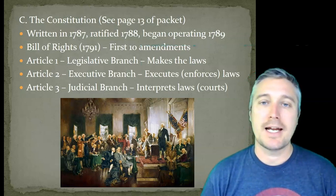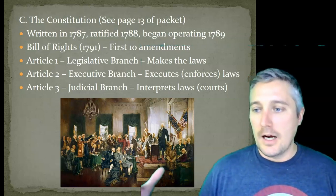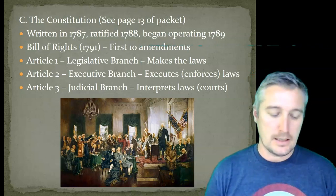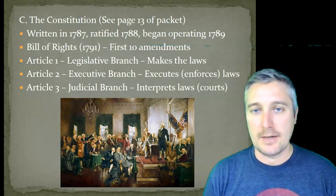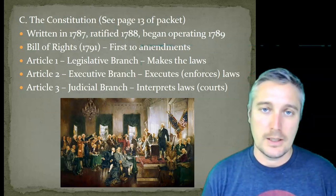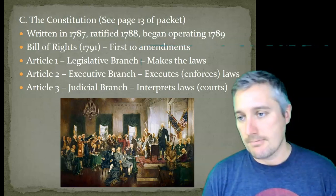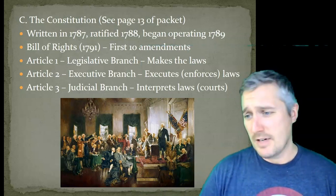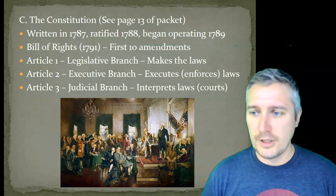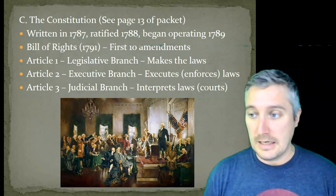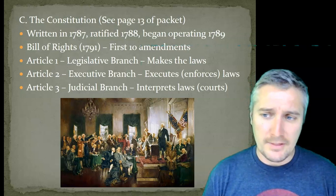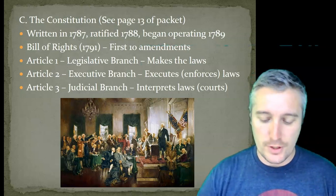Article 3 is the judicial branch — they are the ones that interpret the law. In court trials, you have a violation of the law and a person's day in court where they're allowed to defend themselves and go through due process. The court decides whether that person actually broke the law, interpreting both the Constitution and local law. The judicial branch was by far the weakest branch initially. We're going to see Justice John Marshall rise up and essentially grant powers to the courts on their ability to decide issues of unconstitutionality, which will forever affect the power of the judicial branch.